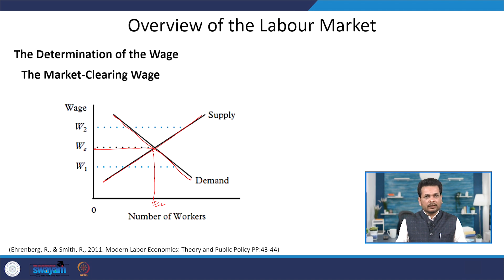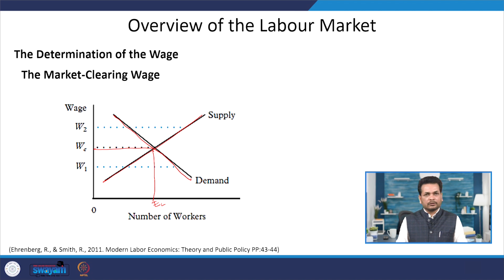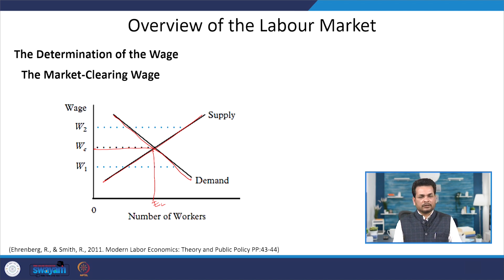This is what we call the market clearing wage. At wage rate W-E, all workers who want to work get a job. There is no excess demand, no excess supply, no shortage of labour, and no surplus of labour. The labour market has fully employed all workers who want to work at this going wage rate. That is why it is called the market clearing wage rate.